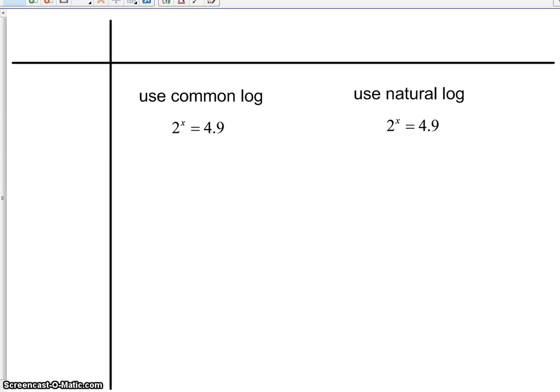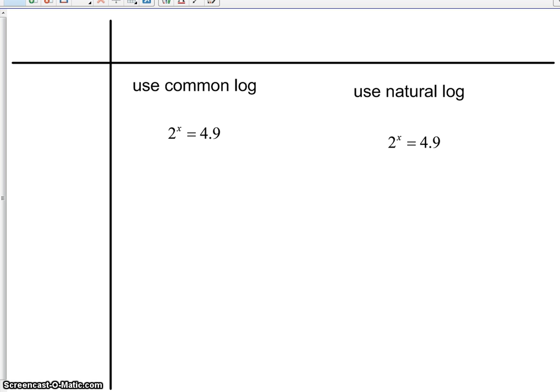Now, I can solve non-e equations with a natural log. If I went through and did this one in section 5, what we do is we took the logarithm of both sides, got x times log of 2 equal log of 4.9, divided both sides by log of 2.